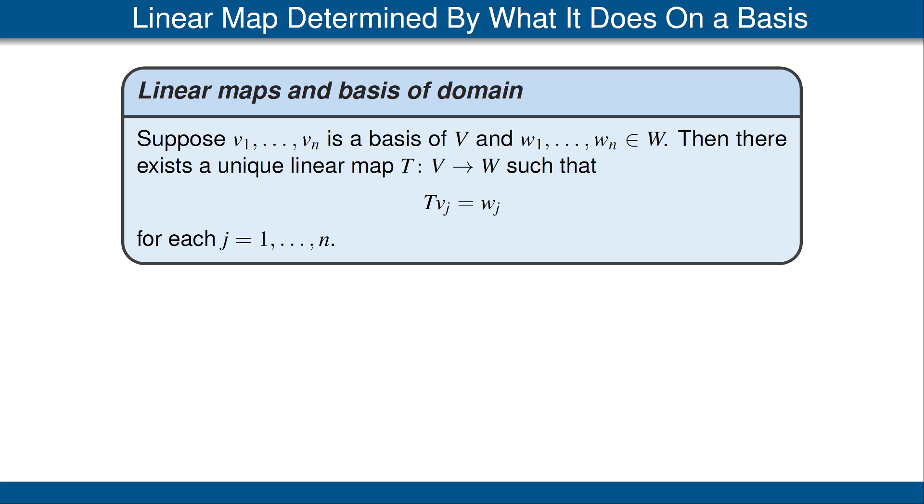For this theorem, notice that the list of vectors v_1 up to v_n in V needs to be a basis. But the list of vectors w_1 up to w_n in W does not need to be a basis. It's an arbitrary list of vectors. They could all be 0, they could all be the same, or it might happen that they form a basis of W.